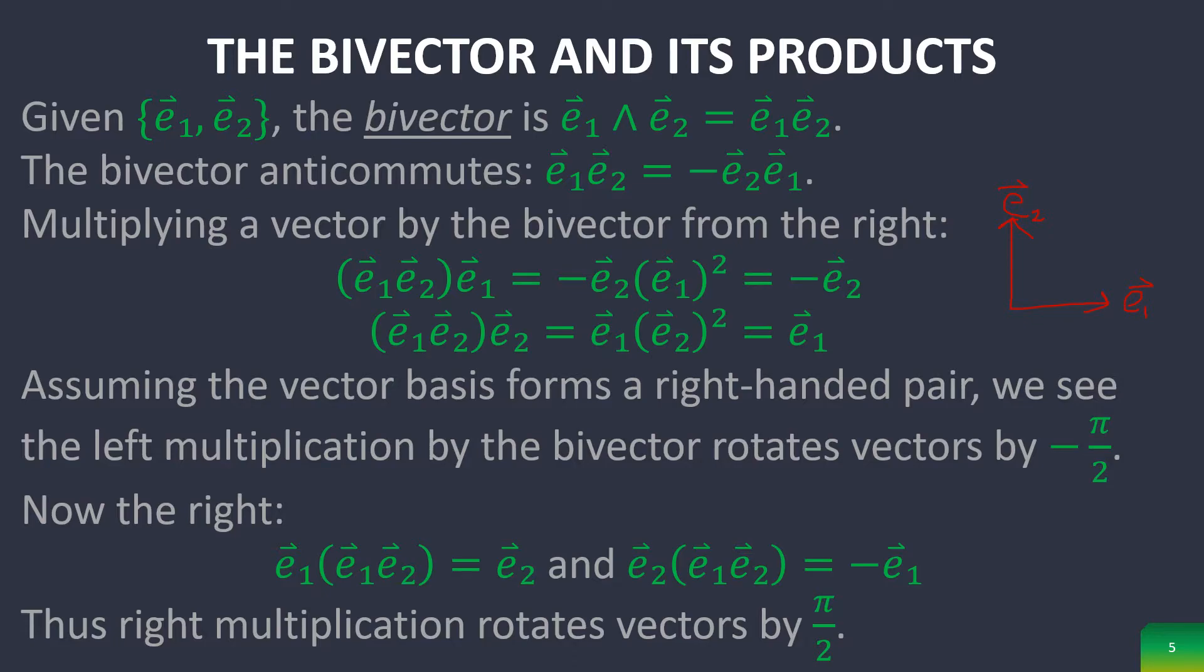If you multiply e sub 1 by the bivector from the left, then it rotates it here to negative e sub 2. And if you multiply e sub 2 by the bivector from the right, then it rotates it down here. Thus, there's a really easy way to encode rotations using the bivector.